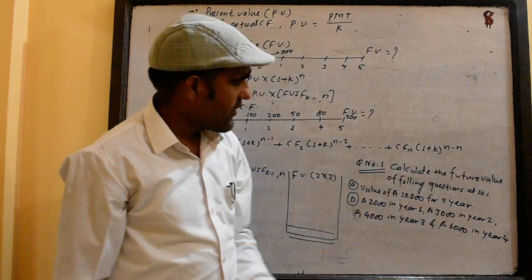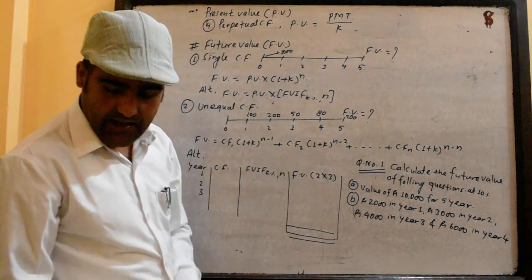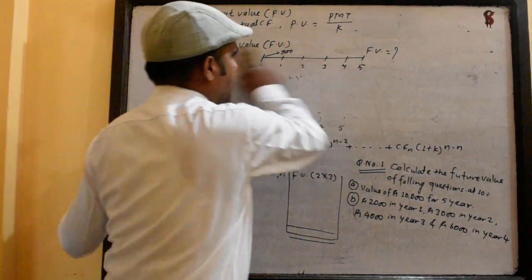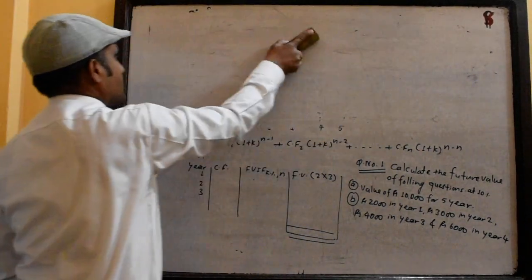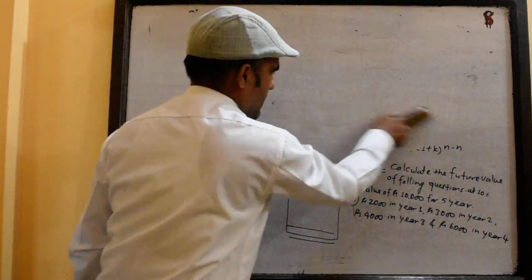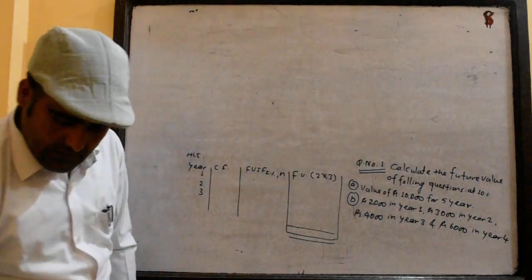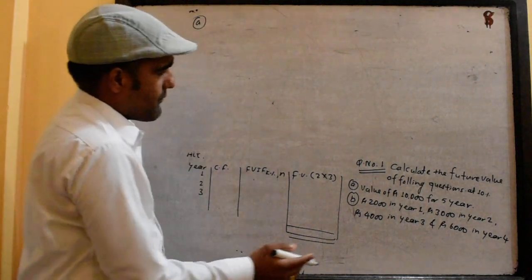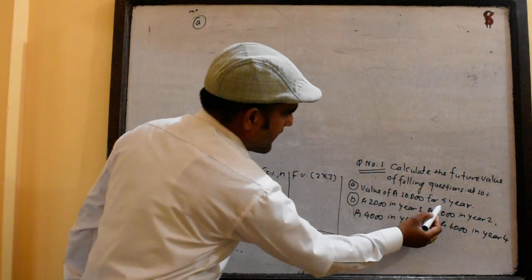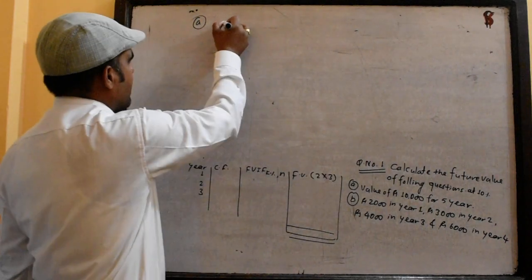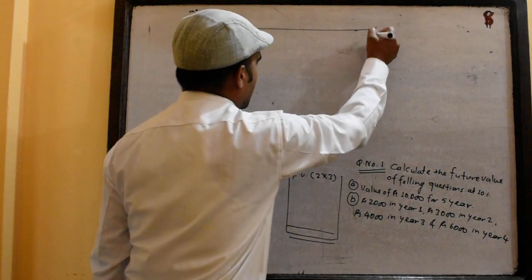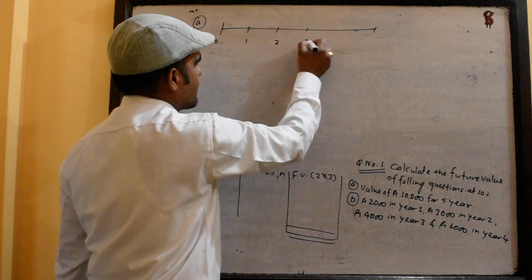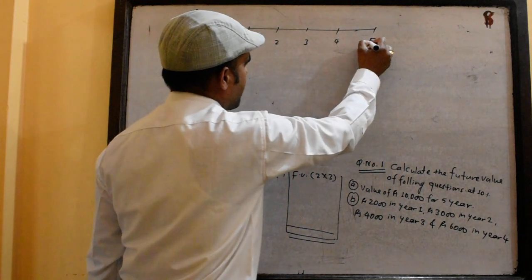If we get the future value of this problem, it will not be true. This will be a number for the future value of the following question: the value of 10,000 for 5 years. And at the time: 0, 1, 2, 3, 4, and 5.